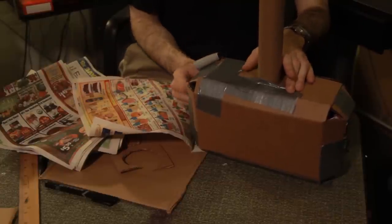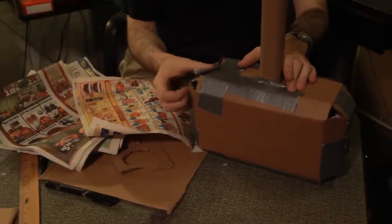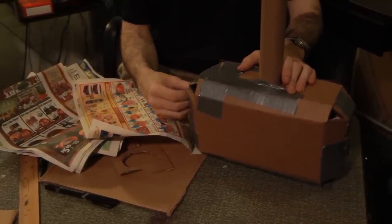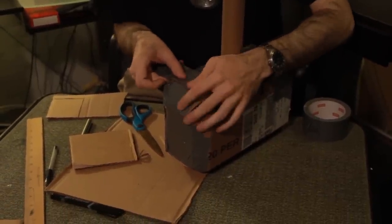Once you've stuffed as much newsprint into the hammer as possible, seal up the corners with duct tape. Wrap all remaining seams with duct tape. Duct tape the top cardboard strip in place and cut away any excess.